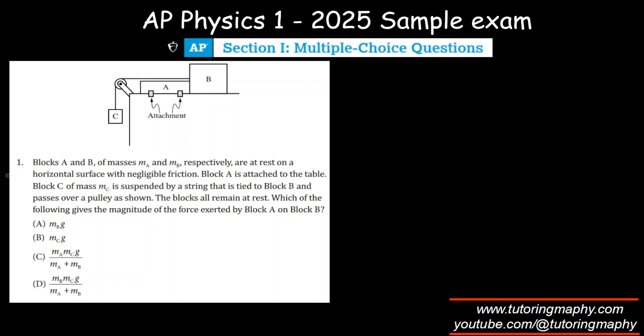All right guys, let's start with this one. We're given that the blocks A and B, so A and B are the blocks over here, of course. Corresponding masses are MA and MB.